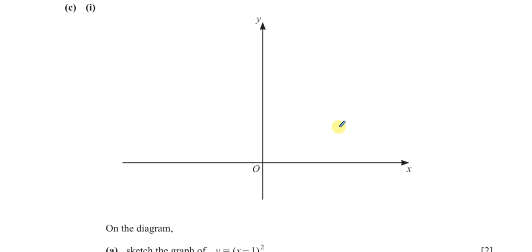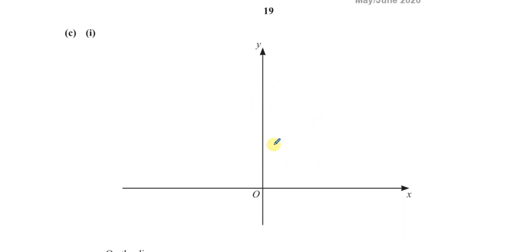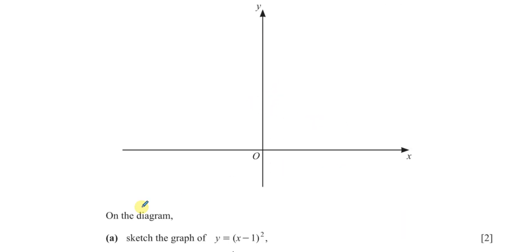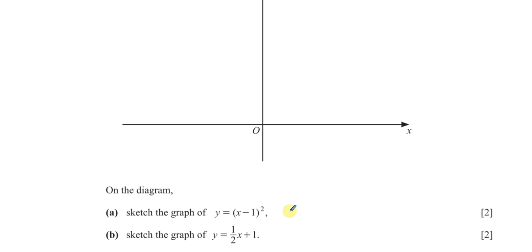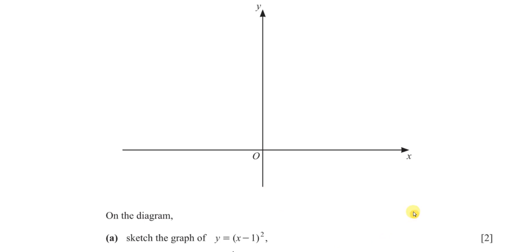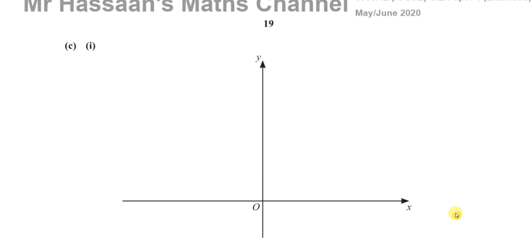In C part 1, they've drawn a pair of axes for you, and they say: part A, sketch the graph of y equals x minus 1 squared, and part B, sketch the graph of y equals one half x plus 1. So both on the same diagram, we've got to sketch these two graphs. They ask us to do the quadratic first, so I'll do the quadratic first.